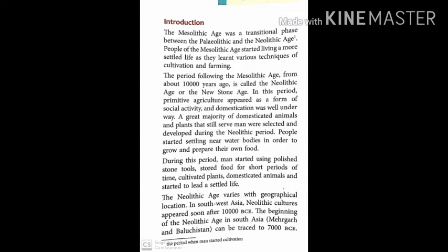A great majority of domesticated animals and plants that still serve man were settled and developed during the Neolithic period. By the time the Neolithic period arrived, they had learned quite a lot — they could do farming to a great extent and kept animals with them, using their meat and milk. People started settling near water bodies in order to grow and prepare their own food, choosing locations near rivers where moisture and water were easily available for farming, drinking, and bathing.